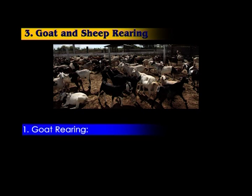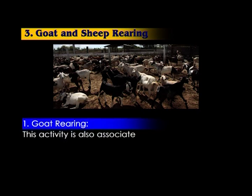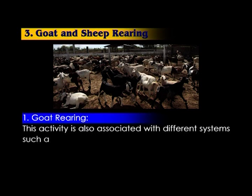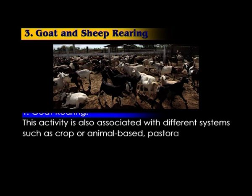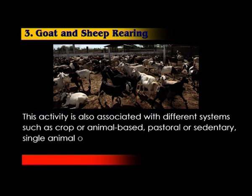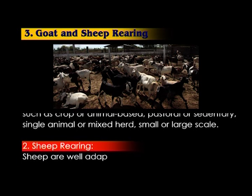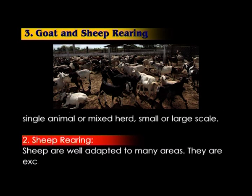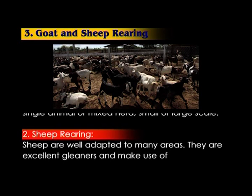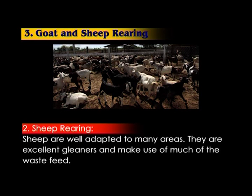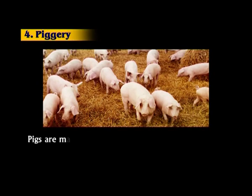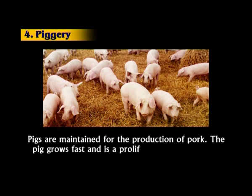Number three is goat and sheep rearing. Goat rearing is associated with different systems such as crop or animal-based, pastoral or sedentary, single animal or mixed herd, small or large scale. Sheep are well adapted to many areas and are excellent gleaners, making use of most waste feed. Next is piggery: pigs are maintained for the production of pork. The pig grows fast and is a prolific breeder, producing 10 to 12 piglets at a time.